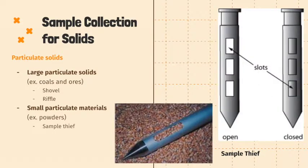For smaller particulate materials such as powders, a sample thief is usually used. To collect the sample, the sample thief is first inserted into the material being sampled, and then the inner tube is rotated until the holes of the two tubes match up, allowing the material to enter. Afterwards, it is rotated to the closed position before removing it from the material.